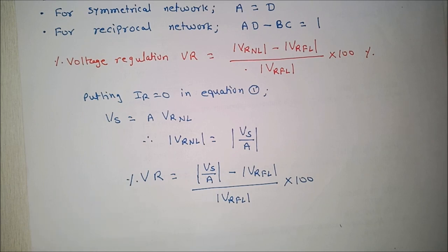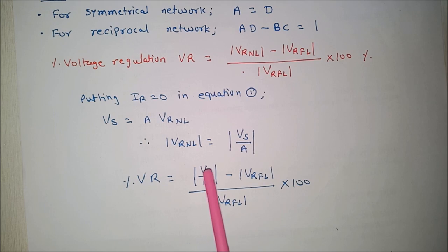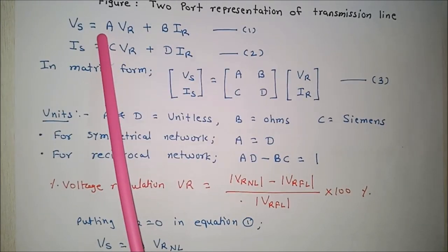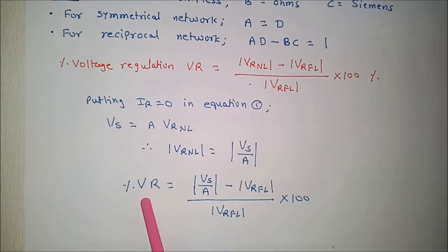So, once we determine ABCD parameter, practically receiving end voltage at a given full load it is given. So, Vs we have determined by using this particular equation. So, we can obtain percentage voltage regulation.